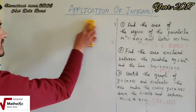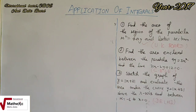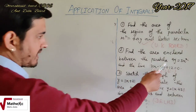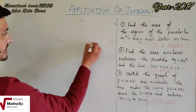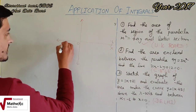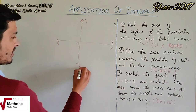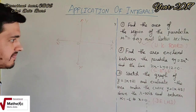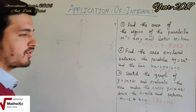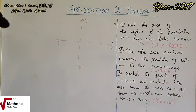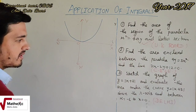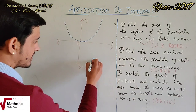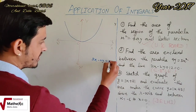Second question में: a Parabola is also given — we will form a diagram. This is x-axis and y-axis. Parabola x² = 4y is in upward direction. What is the line? 3x - 2y = -12.